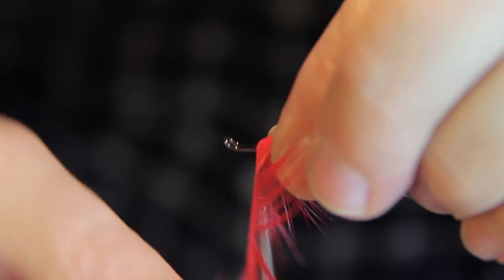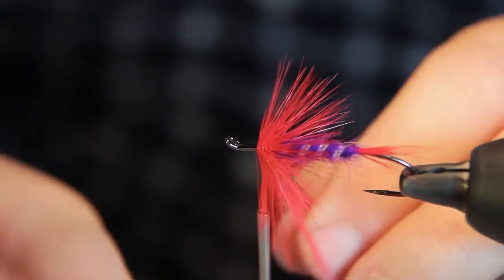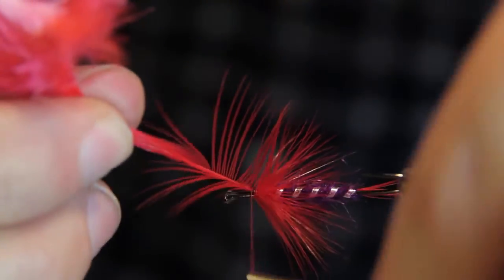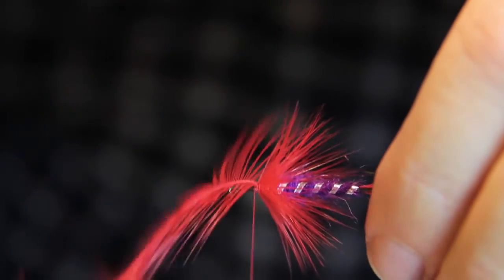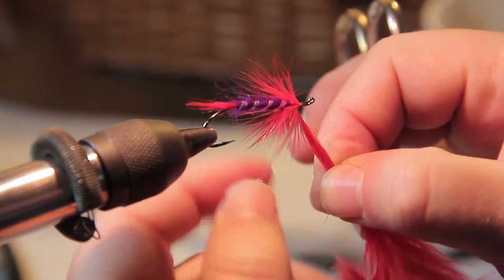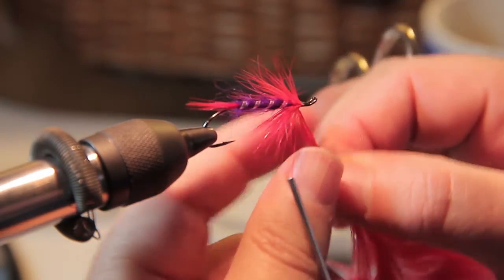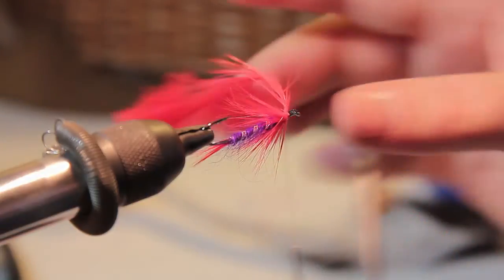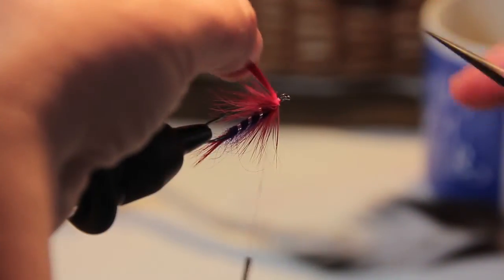Usually I do anywhere from five to ten wraps. Usually about five or six is all that's needed. I think I'll do one more here. Because now I have softer, webbier hackle behind the stiffer. So I'll kind of clear myself an area to tie off. I'm tying off on the bottom. I can rotate around. One, two, three, four, five rearward wraps. Rearward, not forward.